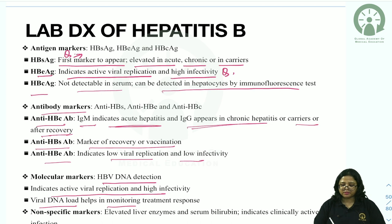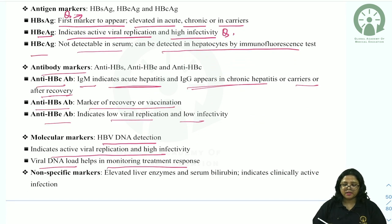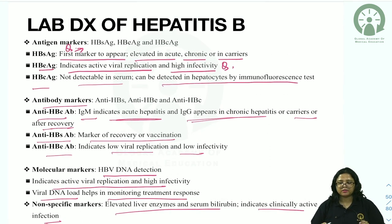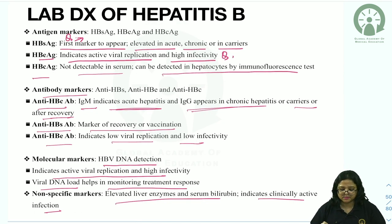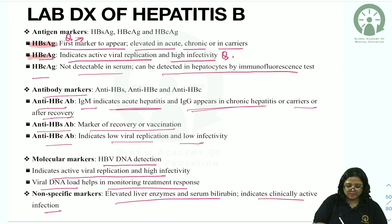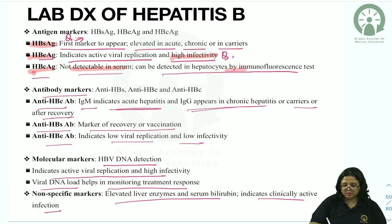Surface antigen is the first marker to appear and is elevated in acute, chronic infection, or carriers. Envelope antigen indicates high infectivity as the virus is actively multiplying. Core antigen is not detectable in serum except by immunofluorescence. Anti-HBs IgM indicates acute hepatitis; IgG appears in chronic hepatitis.